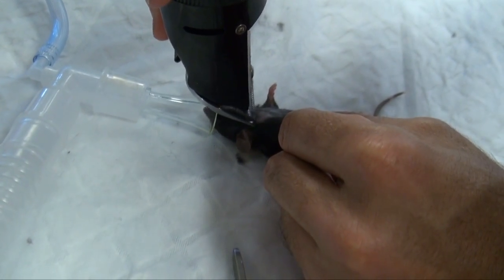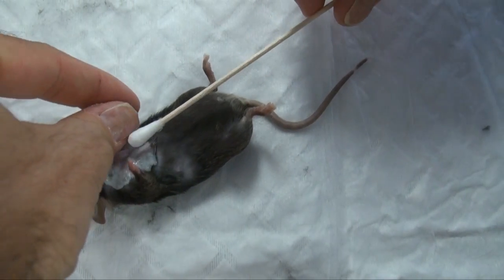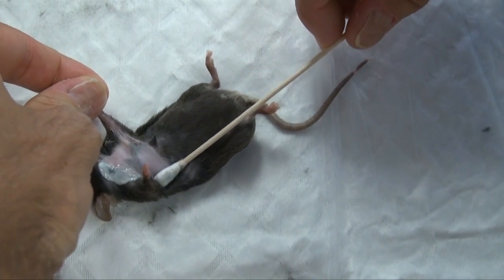Clip the ventral neck and upper thoracic regions and apply a chemical depilatory for 1 minute, then remove with cotton swabs, followed by an alcohol wipe.